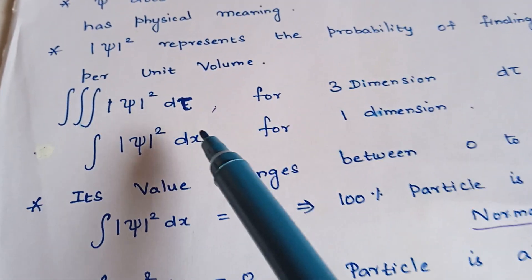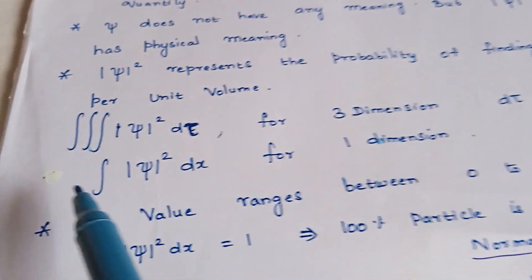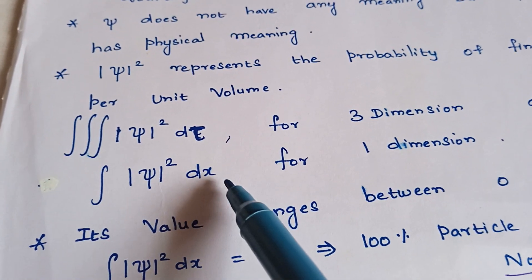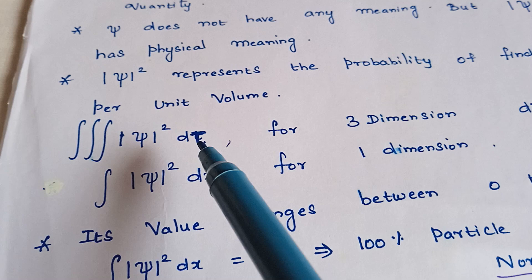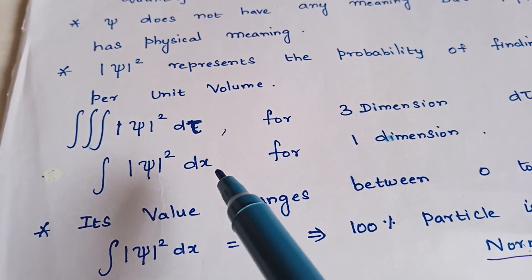If it is for one dimension, the probability of finding a particle in one dimension can be represented by single integral modulus of psi square dx only. Here d tau is three dimension, dx is meant for only one dimension.